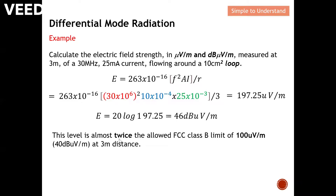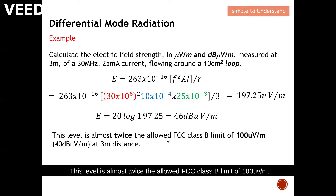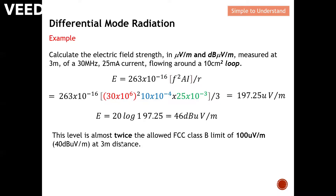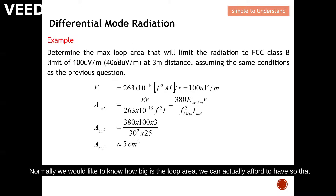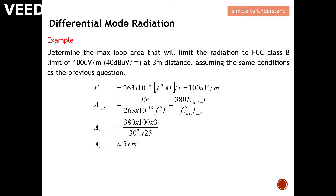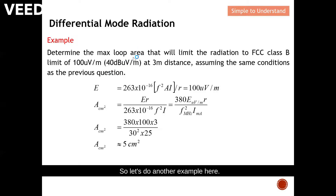From this result we can conclude that this level is almost twice the allowed FCC Class B limit of 100 microvolts per meter at three meters. Normally we would like to know how large a loop area we can afford so that we are compliant to a certain standard — in this case the FCC Class B standard.